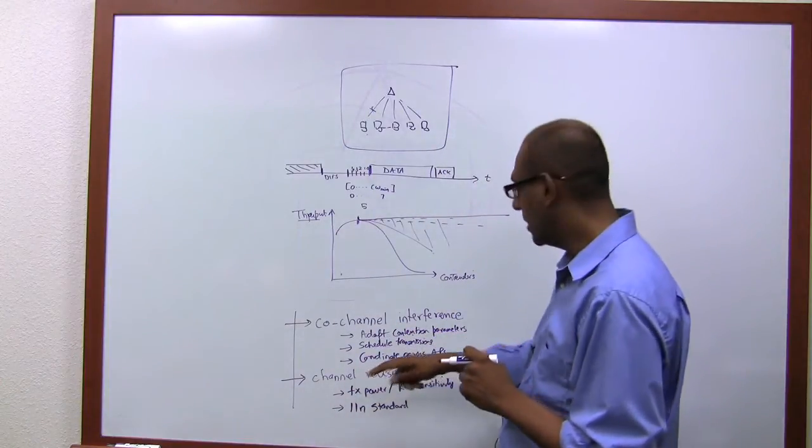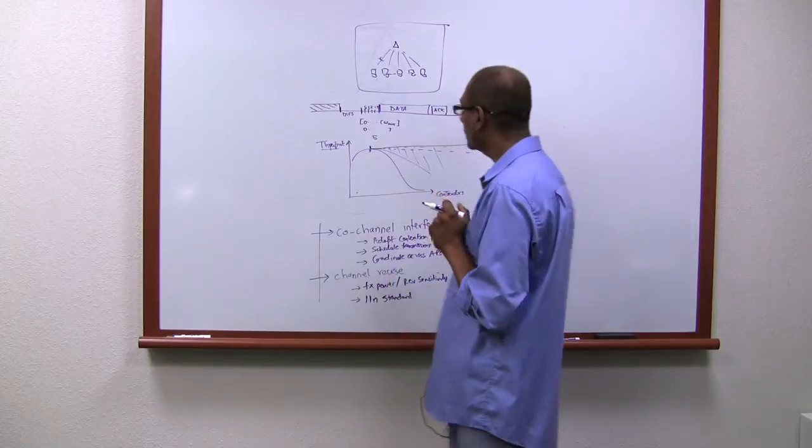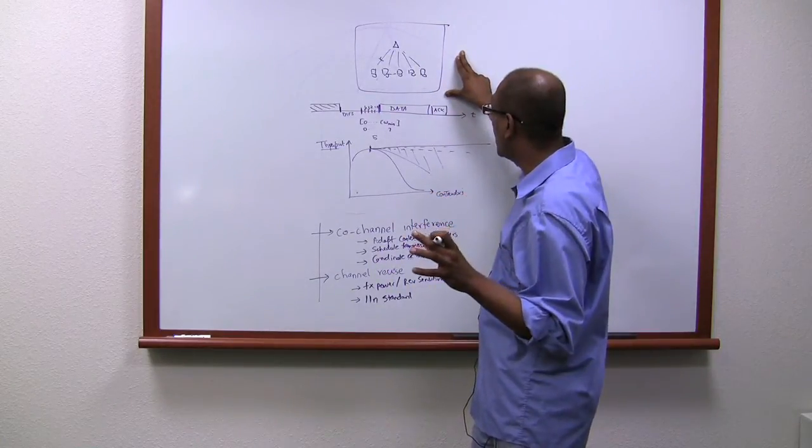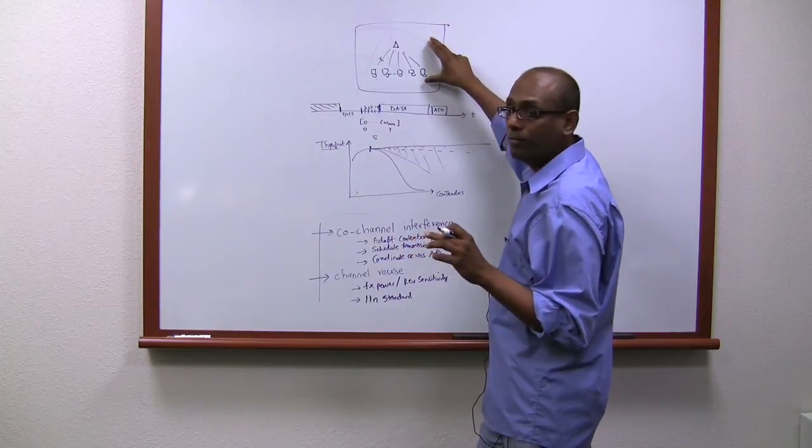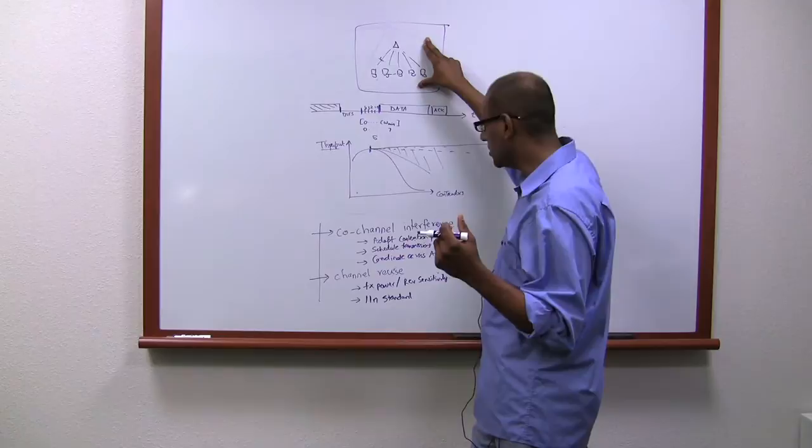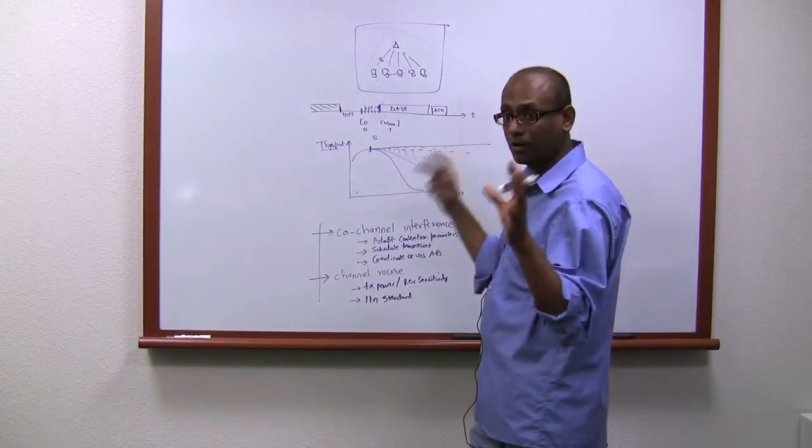Right now let me move to the third point, because points 1 and 3 really need to be thought of in unison. So I hope at this point you understand, at least at a conceptual level, how we are able to minimize collisions and adapt the contention parameters in a way that maximizes throughput within a particular access point.